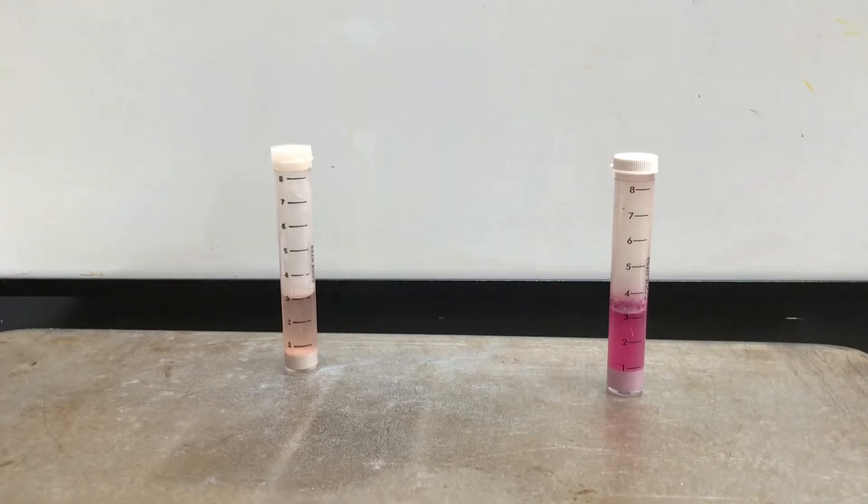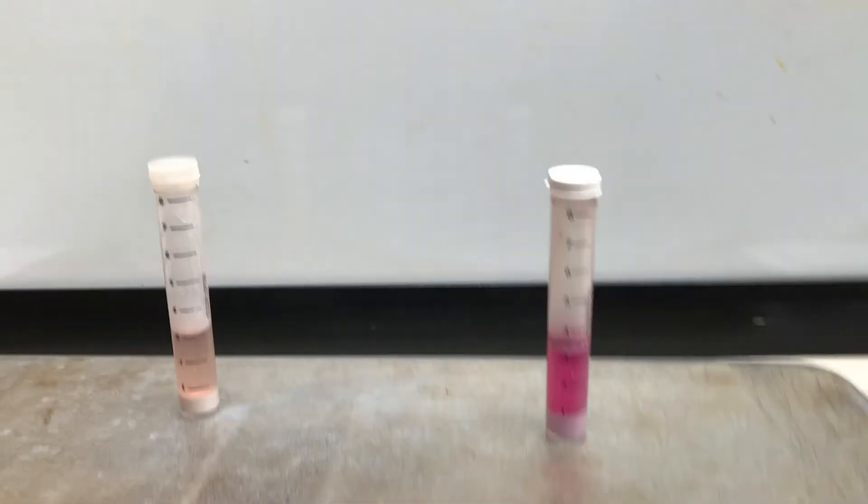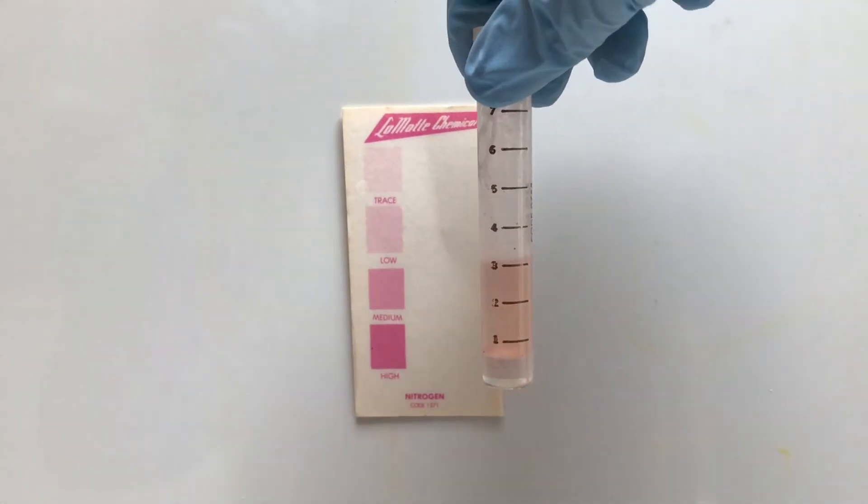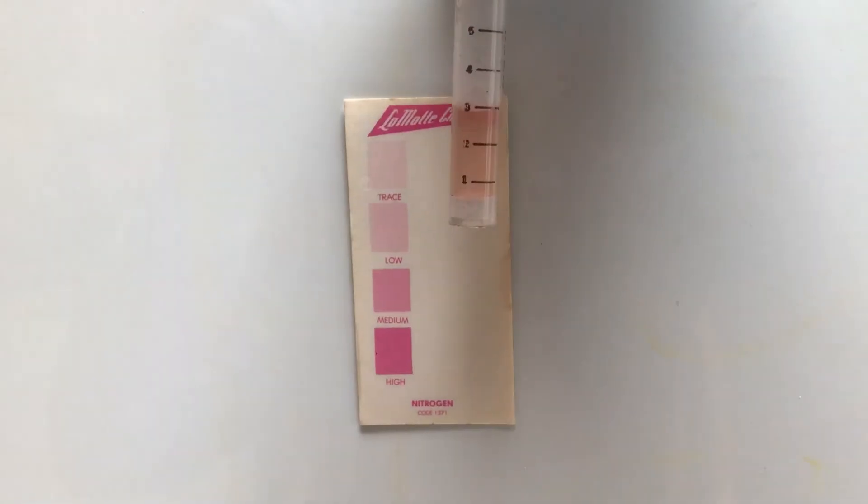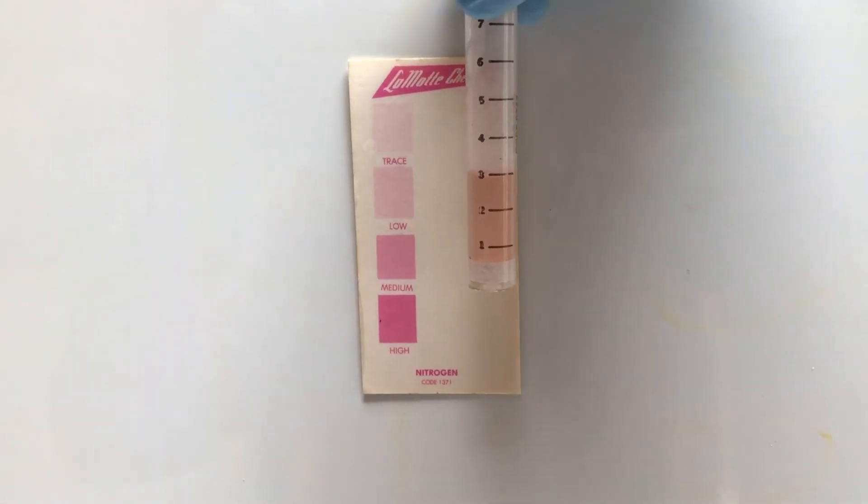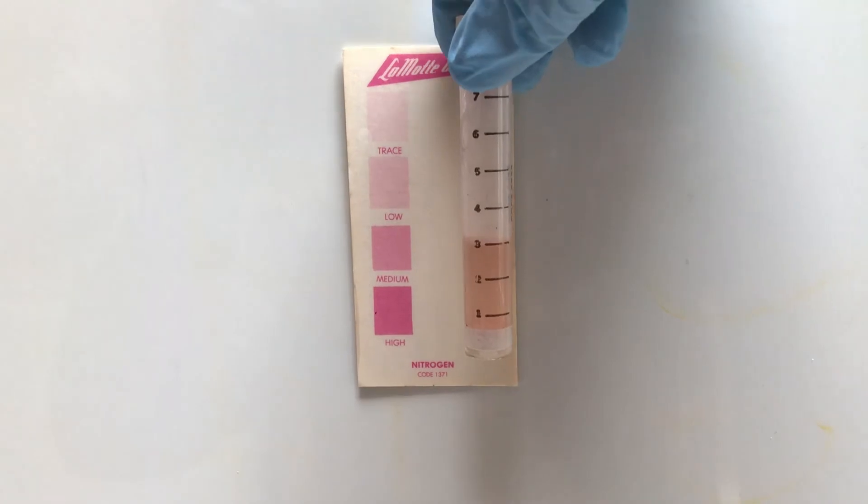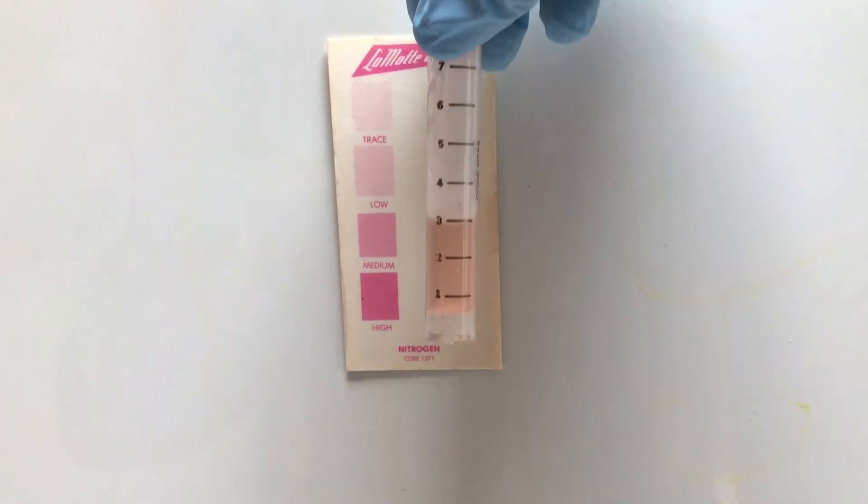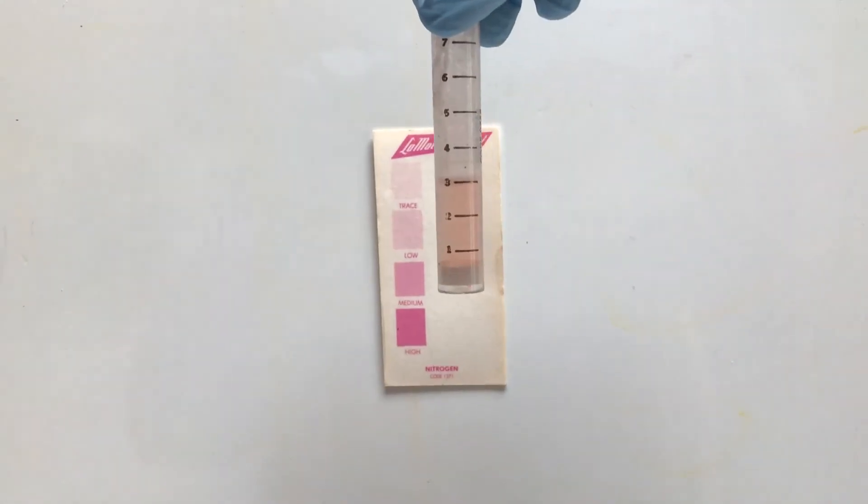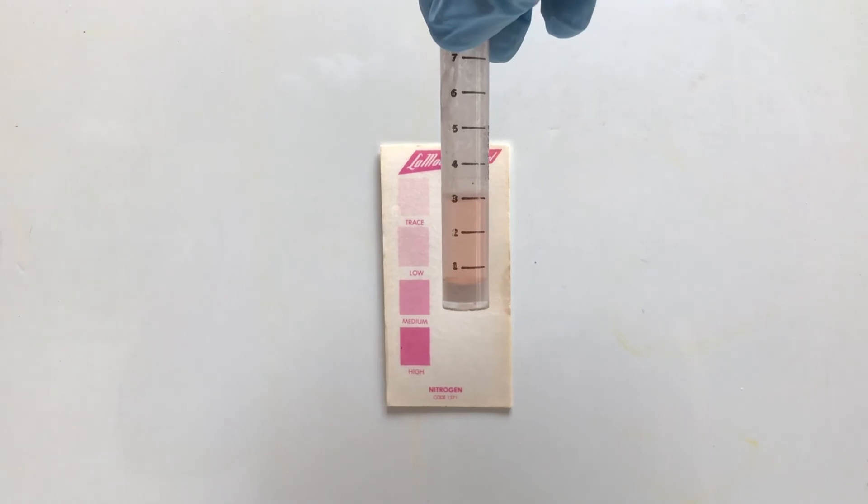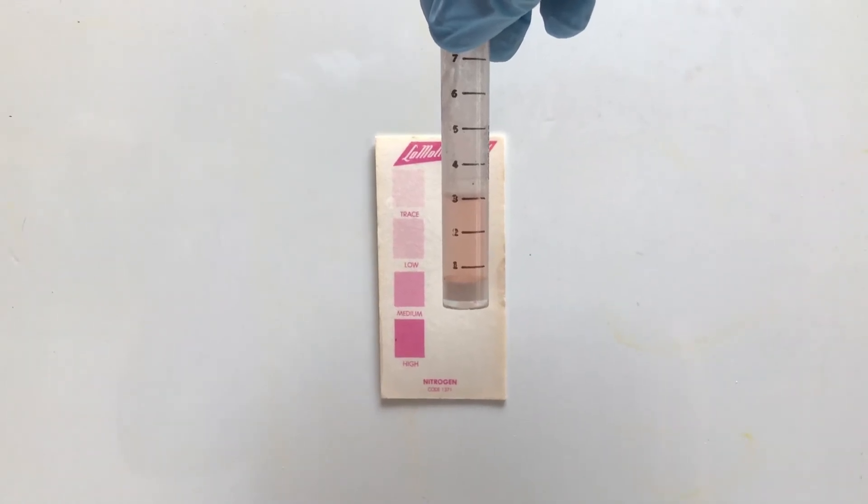So what does this mean? Well we have to check it out against our key, so let's start with our crime scene sample. If you look at the colors, you'll see that trace is almost no color at all, low is kind of a light pink, medium is a darker pink, and then high is that hot pink color. Based on the colors, I'd say this would probably be a low level of nitrogen in our crime scene sample.